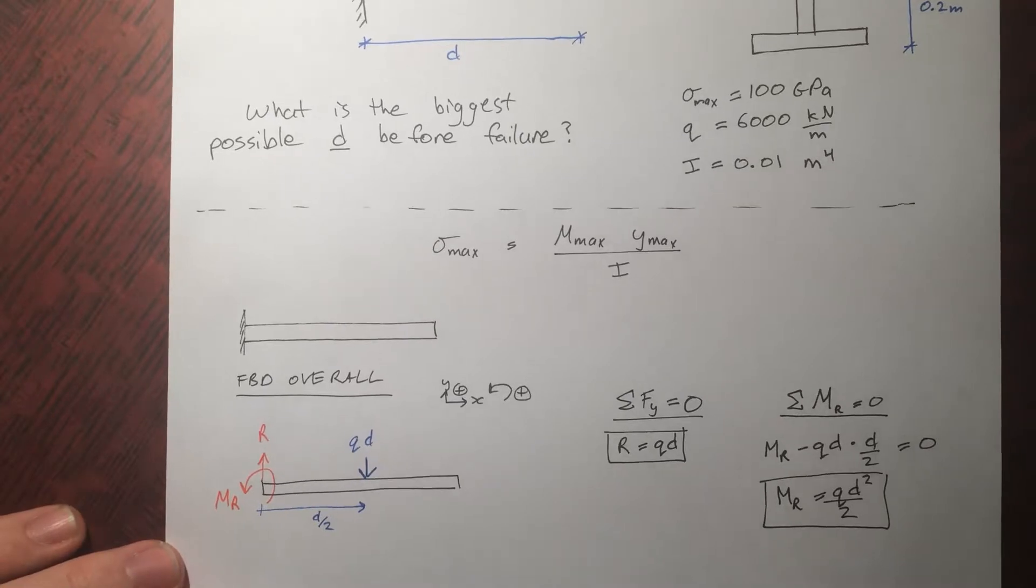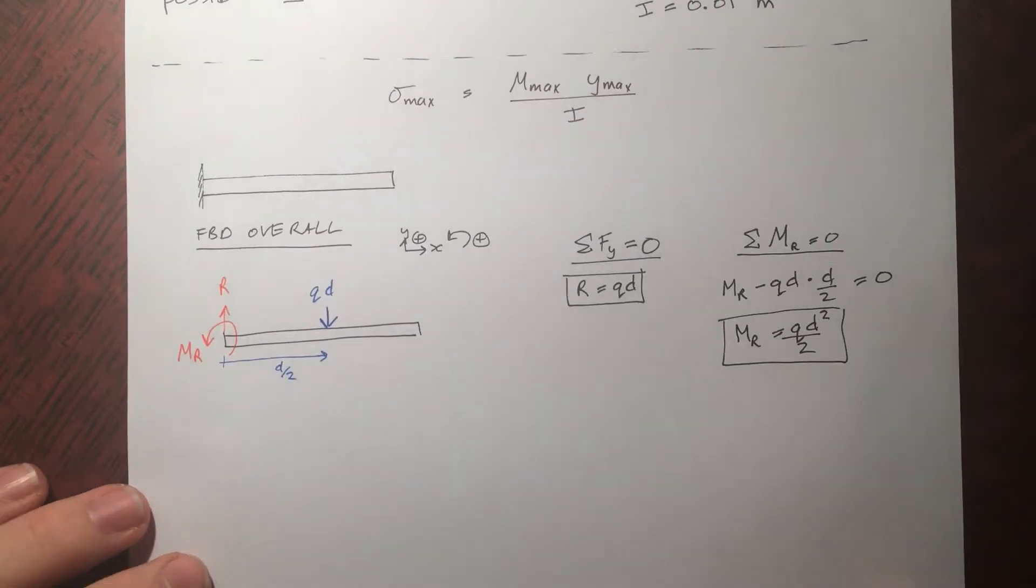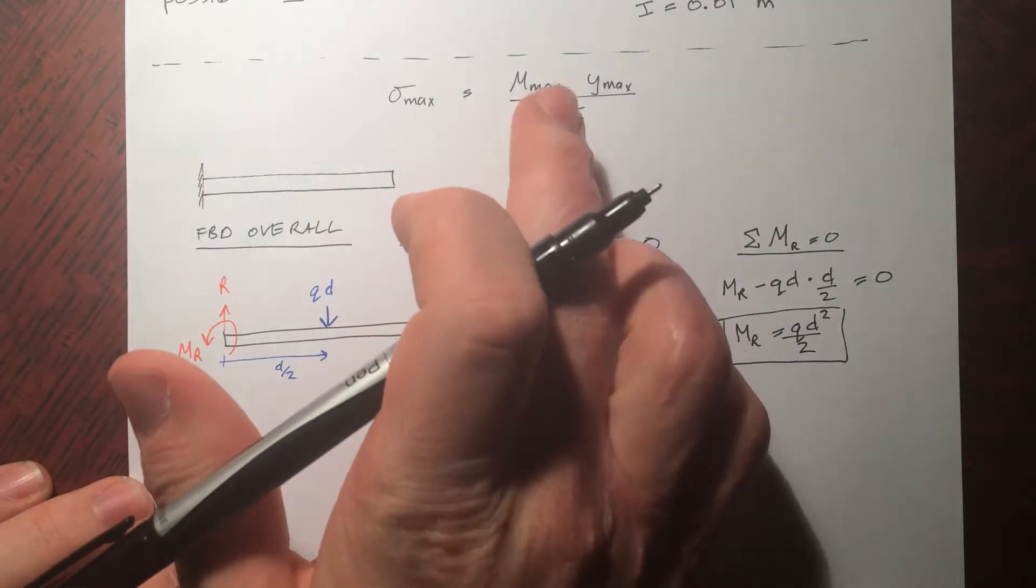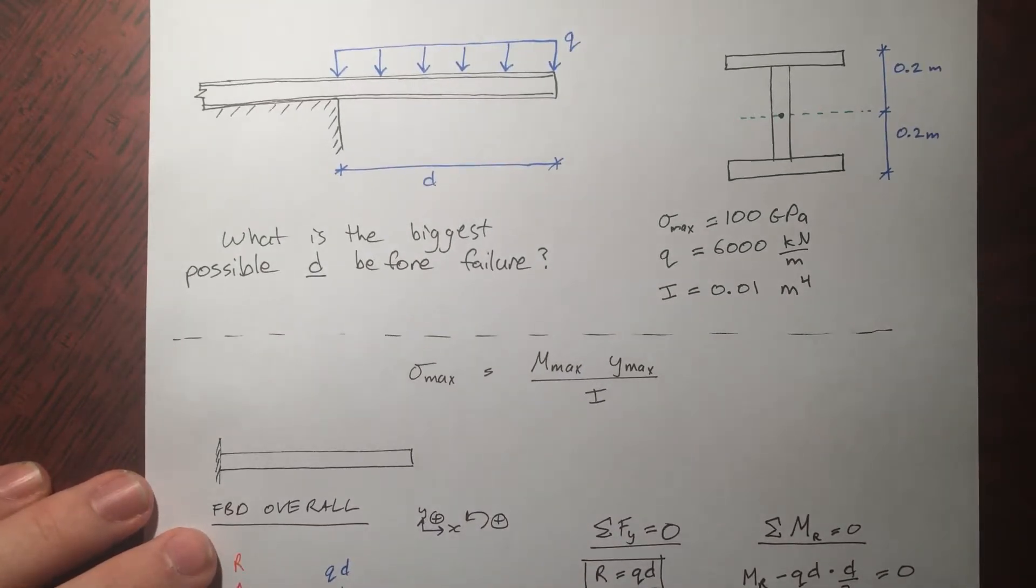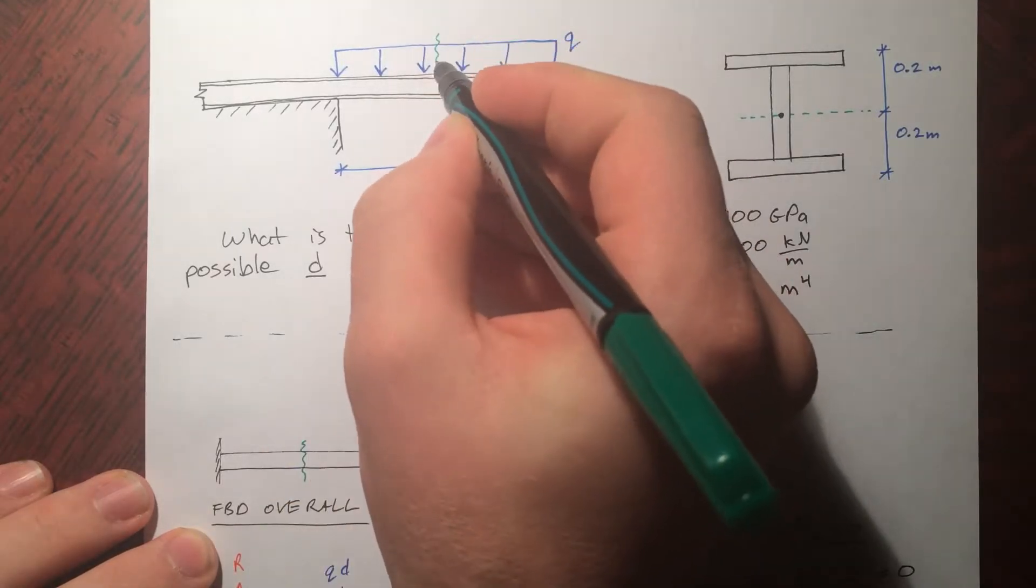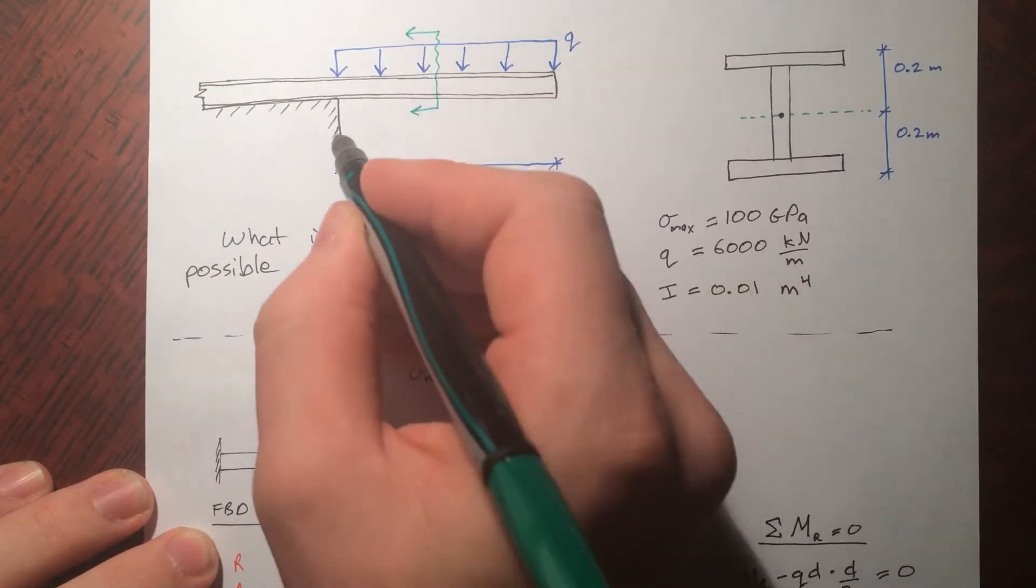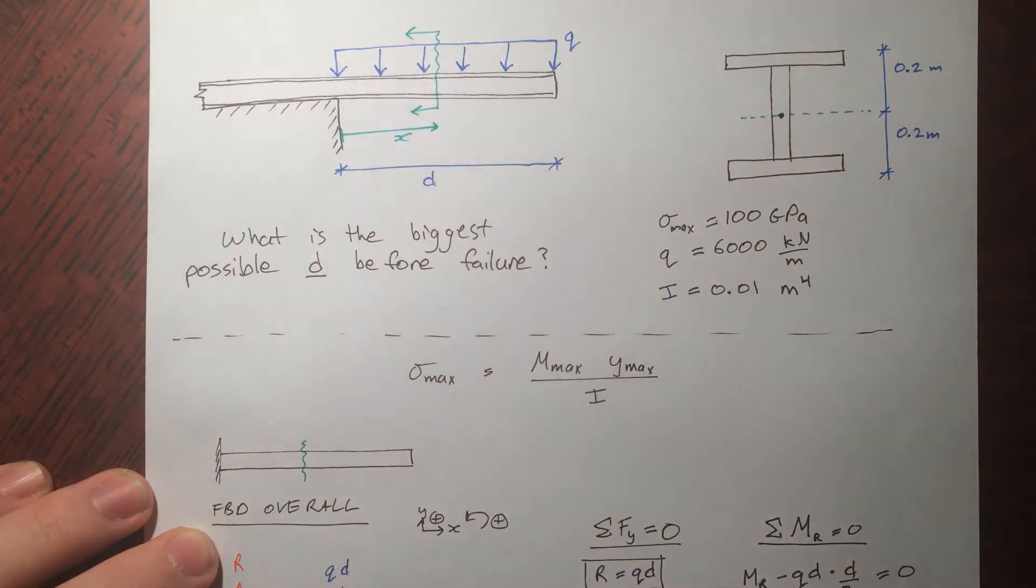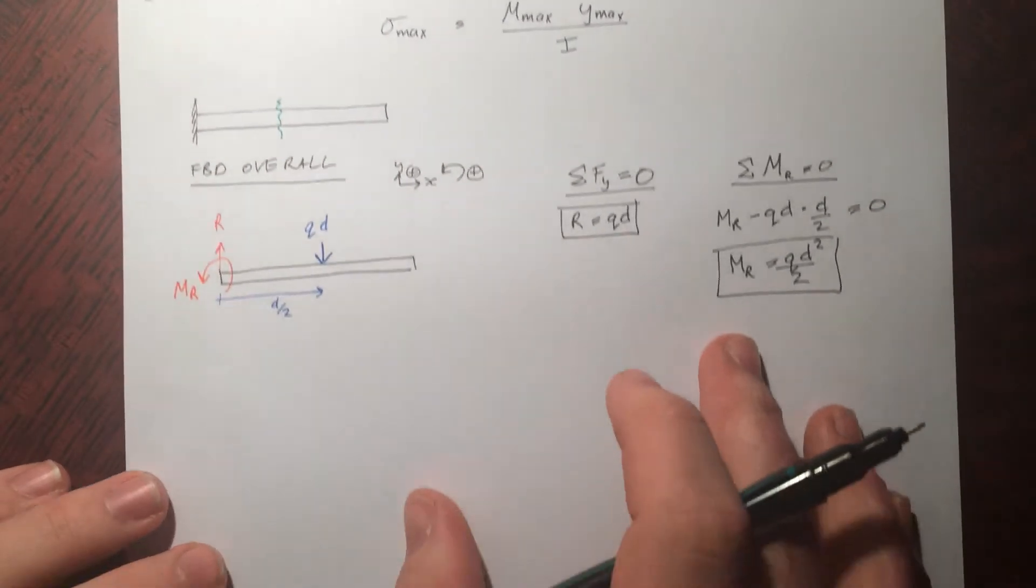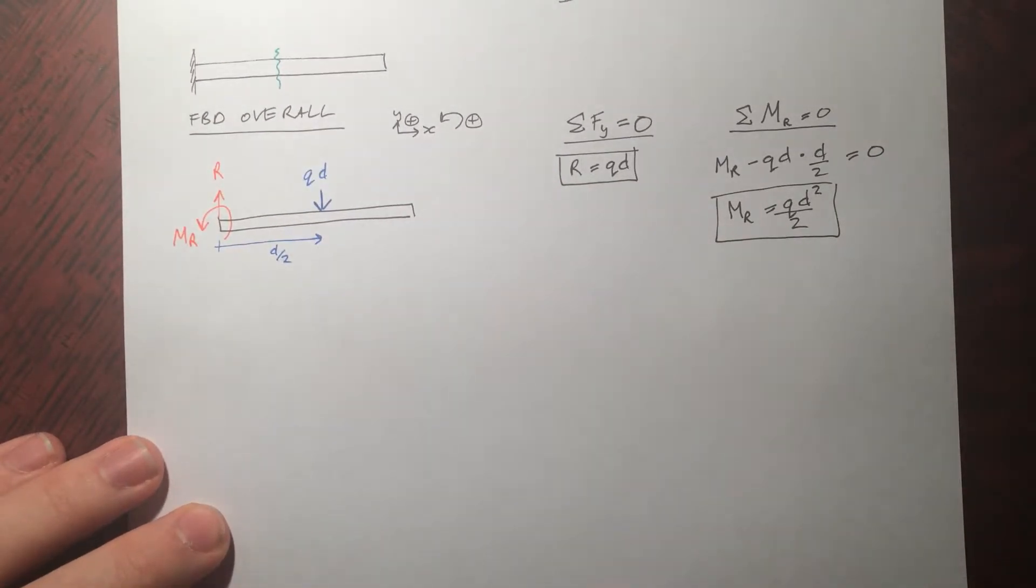And there we have it, those are our two reactions, both in moment and forces. Now we want to find the internal moment, so what we're going to do, like we've always done, is make a cut. So you can imagine it to be here, or if you want, why not up here. And that's going to be made at a distance x away from the base of where it starts to bend over. So let's get a free body diagram of that piece.